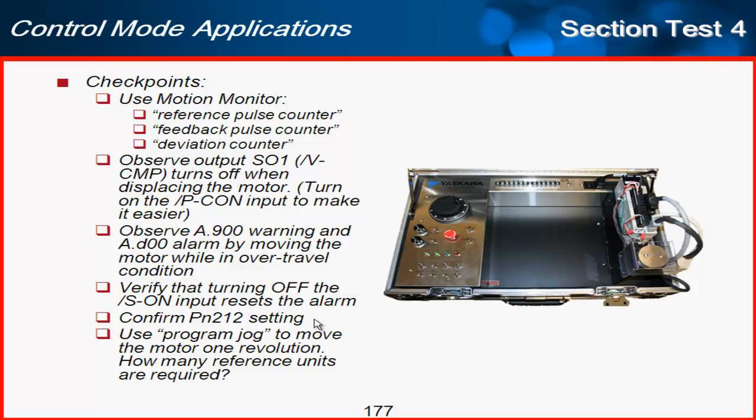And then finally, let's use program jog to move the motor one revolution. How many reference units are required? The answer to that would be 36,000. So I get 360 degrees out of my 0.01 reference unit.